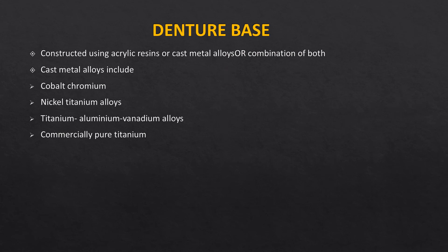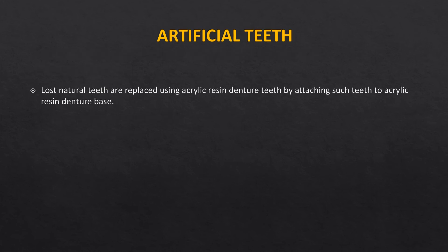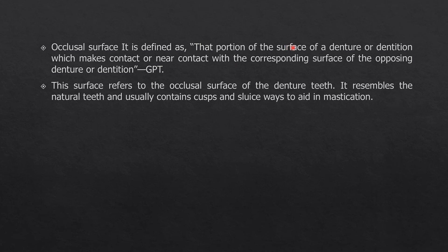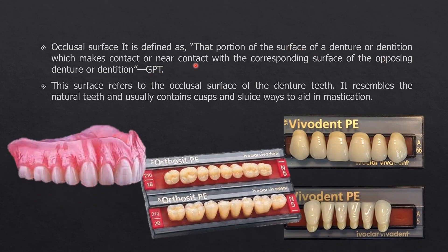The denture base framework is also known as a minor connector, and depending on the design it may be lattice-type, saddle-type, or bead-type. The artificial teeth used in removable partial dentures are the same teeth used in complete dentures — they are also known as the tooth component or occlusal/occluding surfaces of the denture, representing the portion of the denture that makes contact with the opposing dentition.